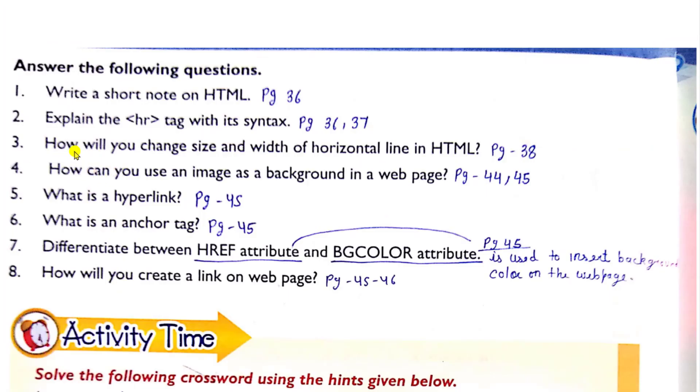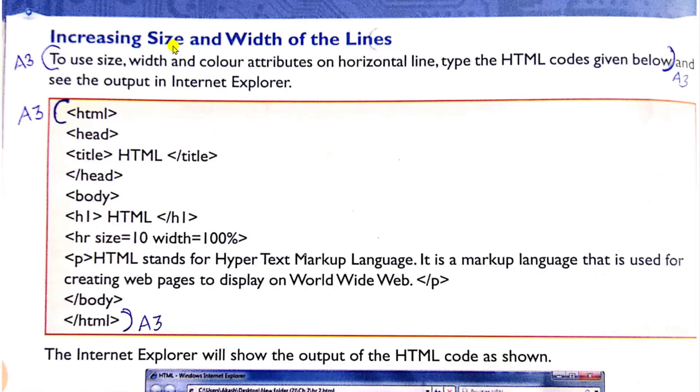Question third. How will you change size and width of horizontal line in HTML? So this answer is on page number 38. Increasing size and width of the lines. Here the answer is to use size, width and color attribute on horizontal line. Type this HTML code given below. And you have to write complete code from this line till this line. Everything you have to write.